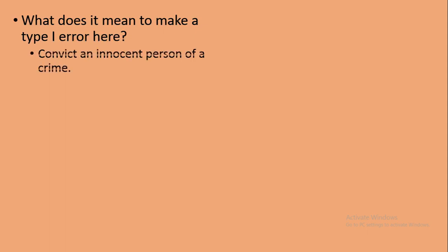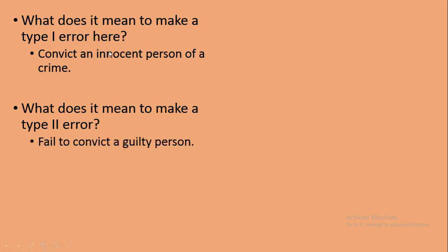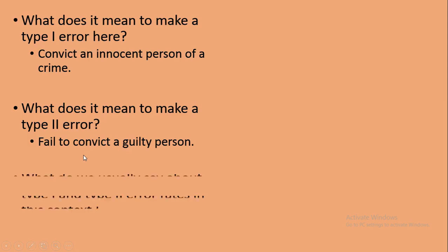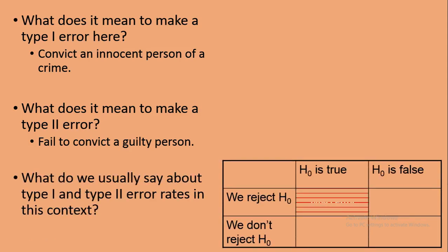اسی طرح research میں بھی errors آتی ہیں۔ Type 1 Error کا مطلب ہے: convict an innocent person — یعنی ایک معصوم کو سزا ہو گئی۔ یہ جو error ہے اسے Type 1 Error کہتے ہیں۔ اور اس کے برعکس، جو مجرم تھا اسے convict نہیں کر پائے، وہ بری ہو گیا — تو یہ Type 2 Error ہو جائے گا۔